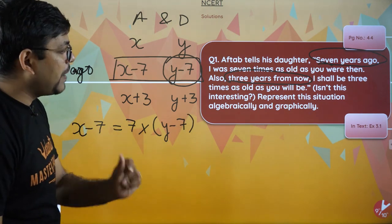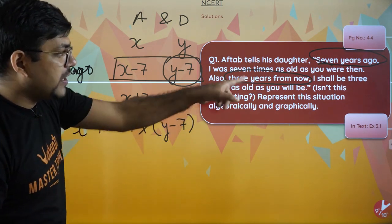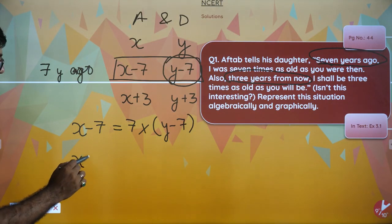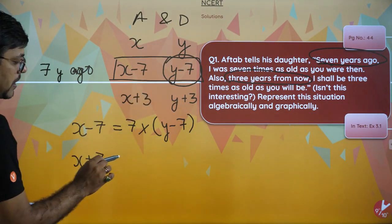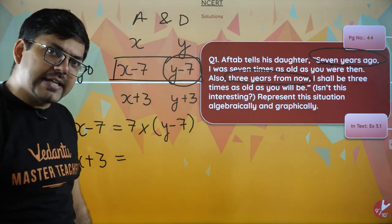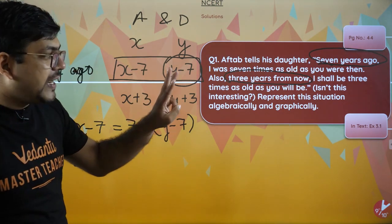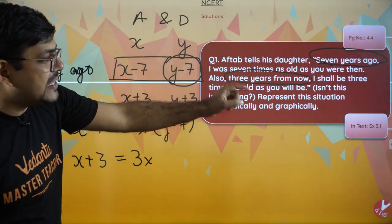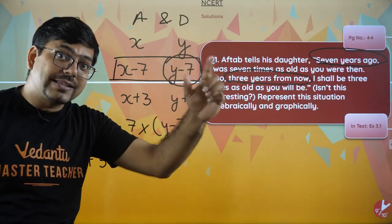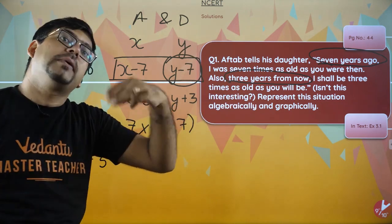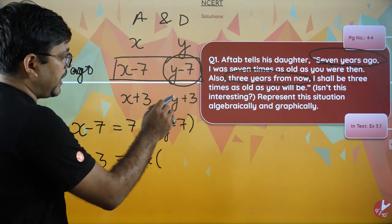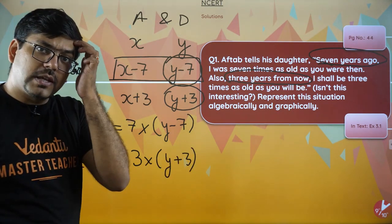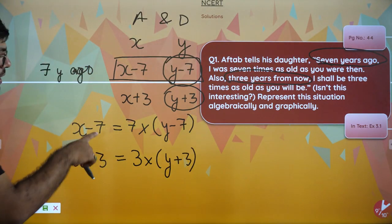पहला equation हो गया। अब बात करते हैं दूसरे की — 3 years from now, I shall be — I मतलब फिर से Aftab बोल रहा है — X plus 3 equal to 3 times as old as you will be, जितनी तुम उस वक्त होगी। आज से 3 साल बाद तुम्हारी उस age का 3 गुना मैं भी होऊँगा। तो 3 times of Y plus 3. तो बस, आपके पास 2 equations आ गए।